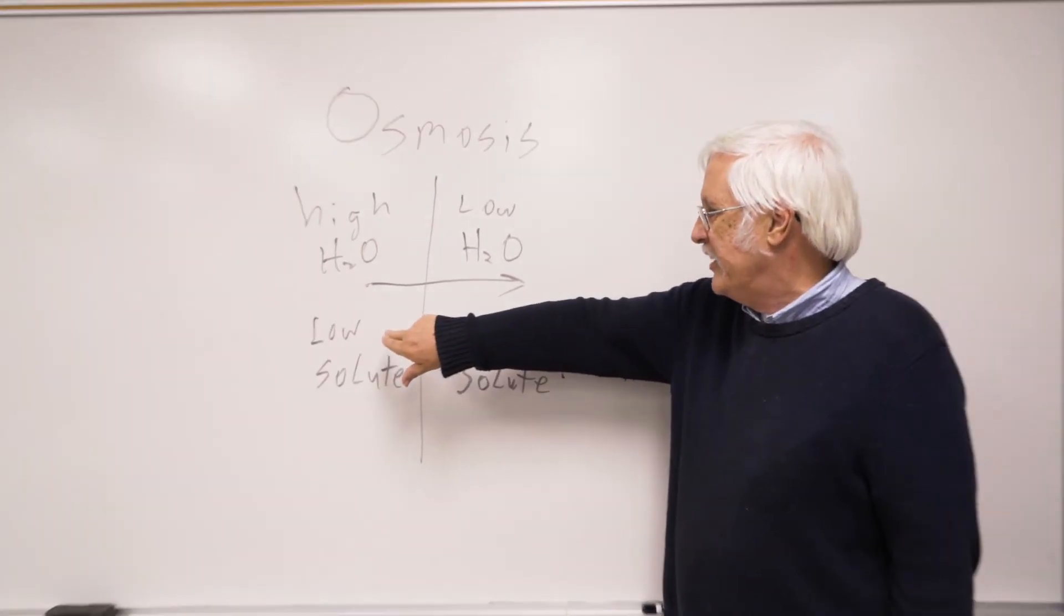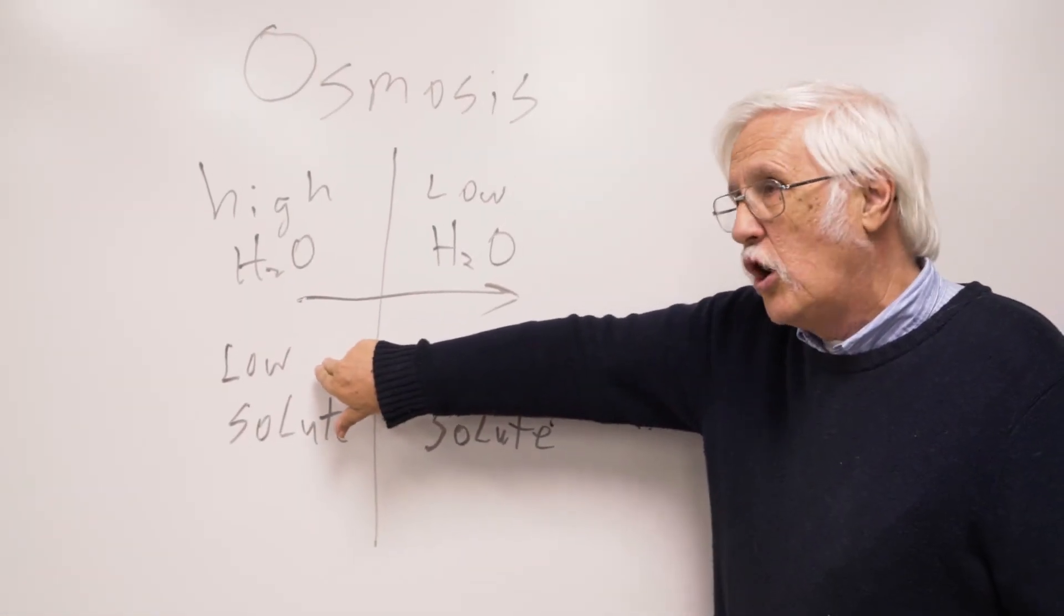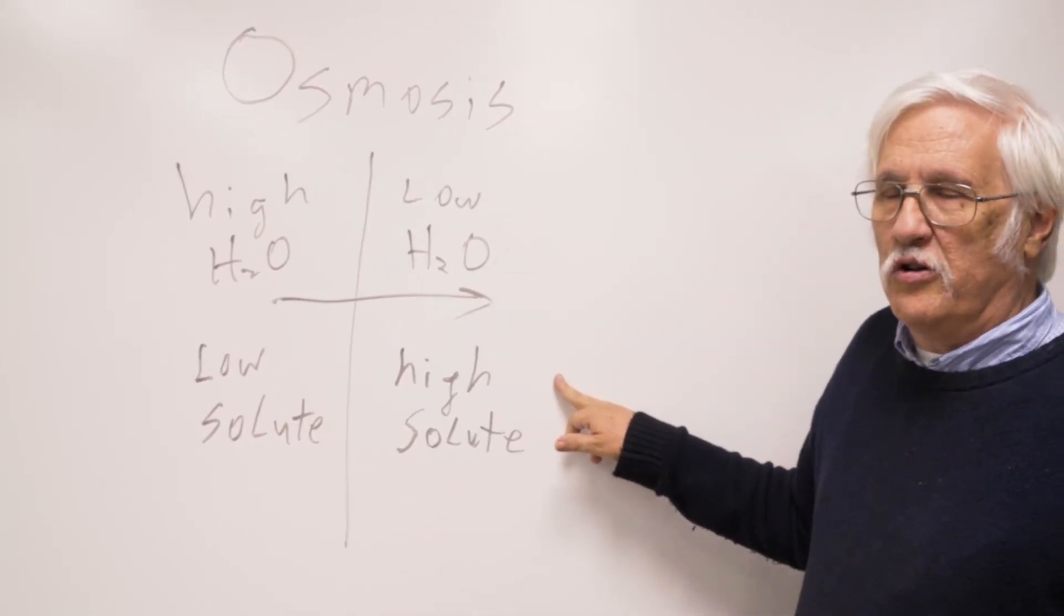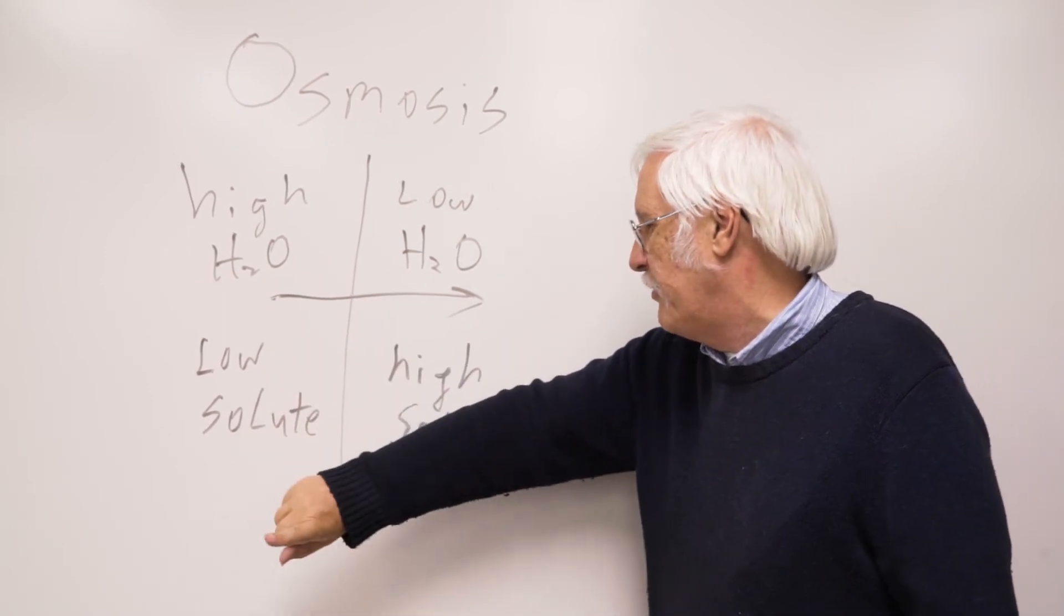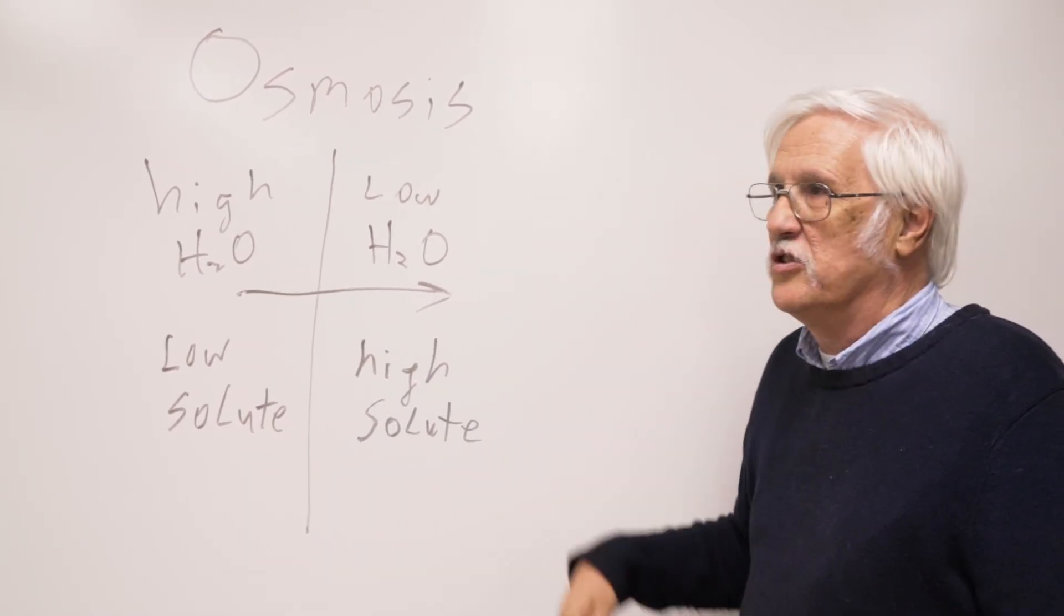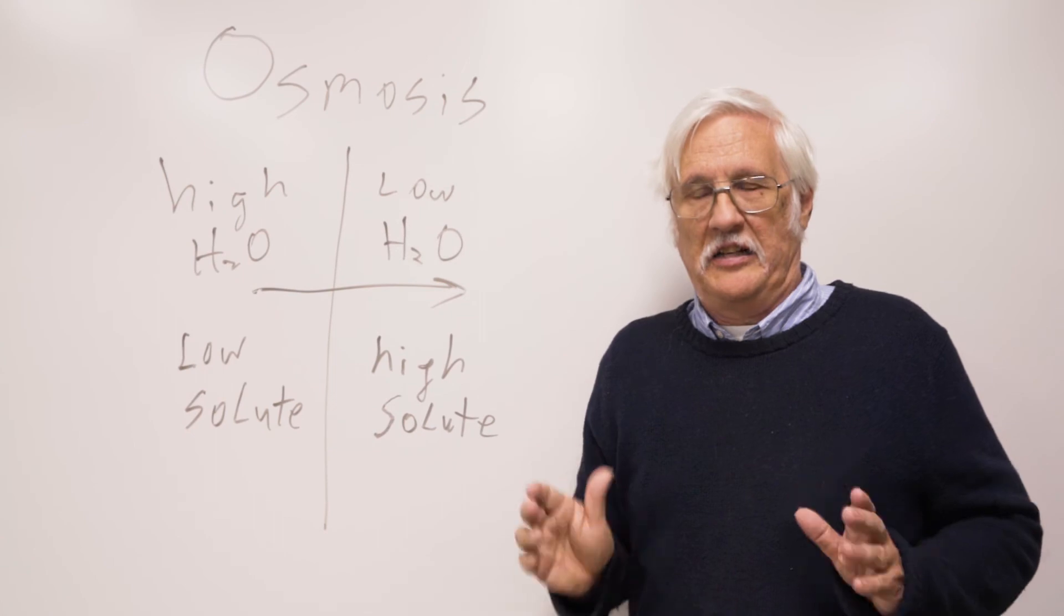If the amount of solute on one side is low and the amount of solute on the other side is high, water goes from the low solute side to the high solute side, and that's osmosis.